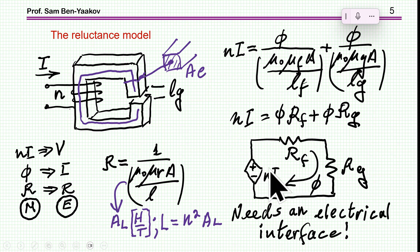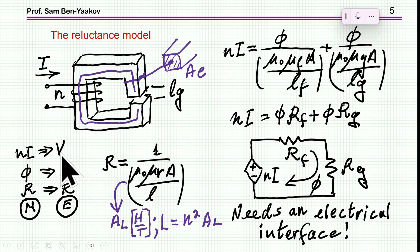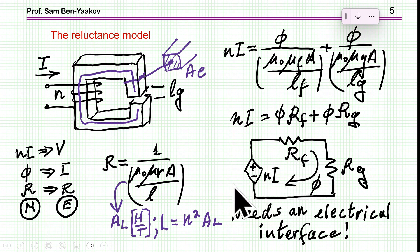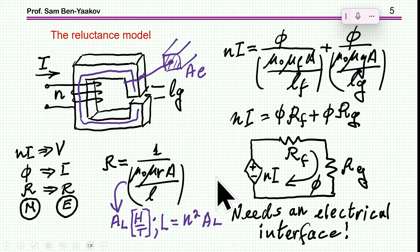Now that we have this representation, we can describe it by an electrical network in which we have a voltage source. The flux will be the current and the reluctance will be the resistance. So this network represents the equation where the MMF is emulated by the voltage, flux by current, and reluctance by a resistor. We do need some electrical interface — I'm just showing the MMF here. The voltage, current, and the full electrical part, which I'm not showing in detail here, require an interface, which we'll see in the next model I'll be discussing.